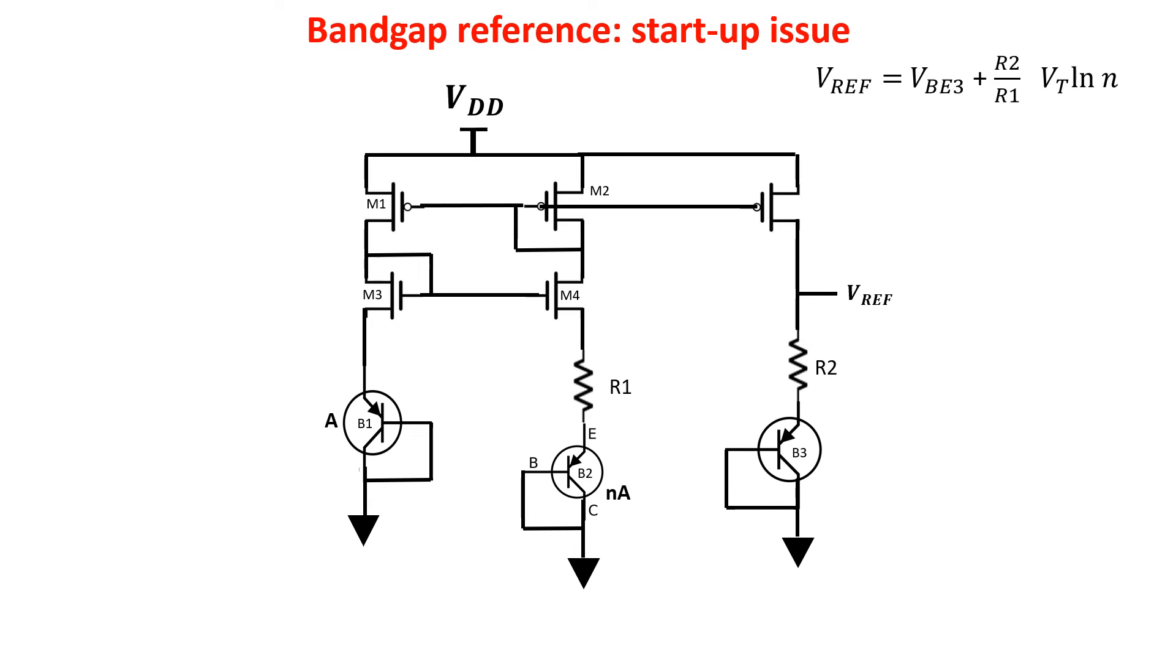This circuit produces a voltage reference almost temperature independent, but it has an issue in the startup because we have two operation points. In the first, IC1 is different from 0 and equals IC2, but there is a second operation point in which IC1 equals IC2 equals 0. This because the PMOS gates go to VDD and the NMOS gates go to 0. When we switch on the power, the circuit could go in this second operation point and stays there.